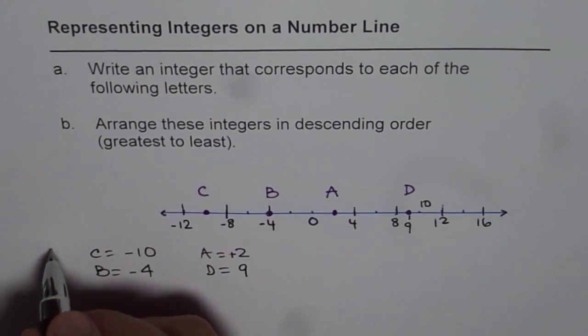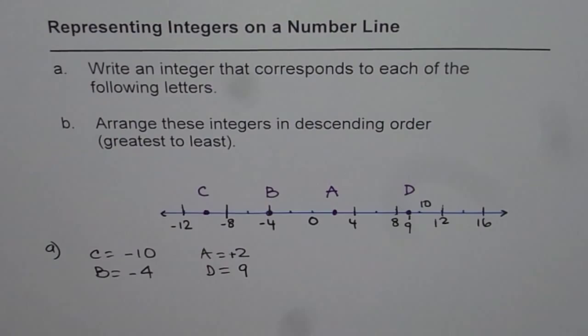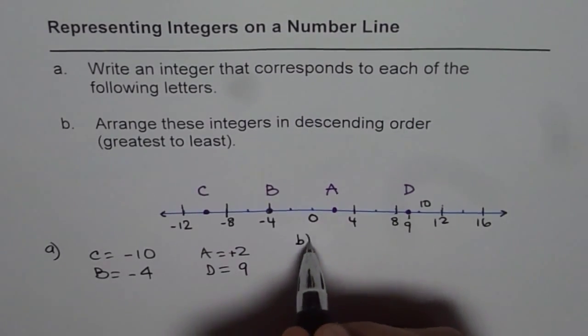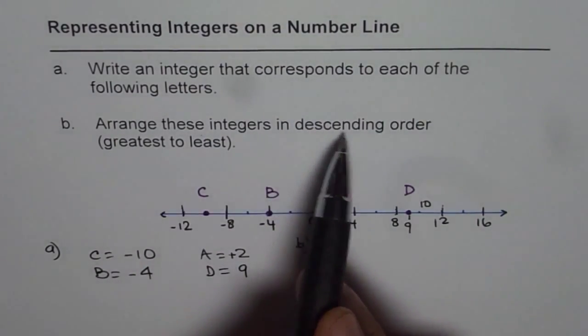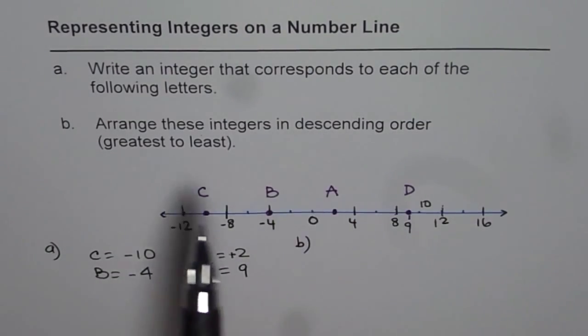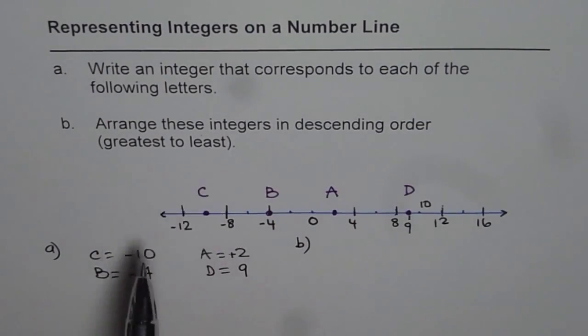So that is part a of your question. Part b is arrange these integers in descending order. Descending order means from greatest to least.